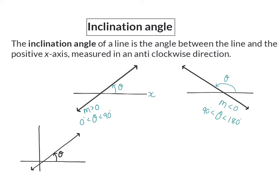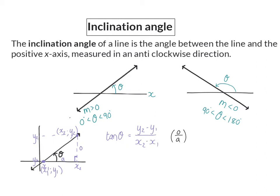To calculate this angle of inclination, we are going to use a formula, and this formula is deduced using trigonometry. If we draw a 90-degree triangle in our sketch and use two abstract coordinates, we can say that our opposite side will be the difference between the two y values of the points, and our adjacent side will be the difference between the two x values. So tan of theta equals opposite over adjacent, which is the difference in y values over the difference in x values — and you should recognize that as the formula to calculate the gradient of a line. So tan theta will simply be equal to the gradient of this line, and this forms our formula to calculate the angle of inclination.